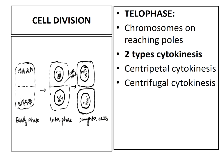In the telophase stage, the nucleolus and nuclear membrane reappear, and chromosomes undergo uncoiling and uncondensation, forming a network-like chromatin. At the end of telophase, two exactly similar cells — both morphologically and genetically — are formed.